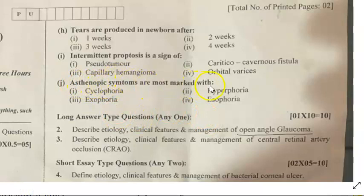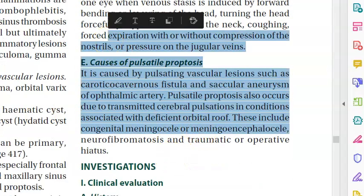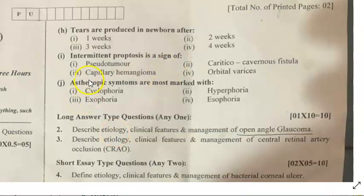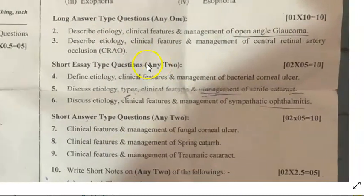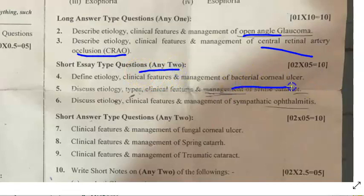Note: pulsatile proptosis is a separate condition from intermittent proptosis. Asthenopic symptoms are most marked when trying to focus (accommodation strain). Long answer questions in this paper: open angle glaucoma is very important, and CRAO is another important question. Bacterial corneal ulcer is also asked.